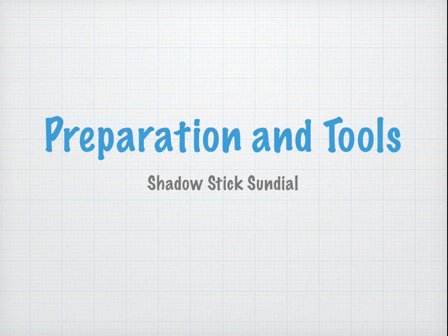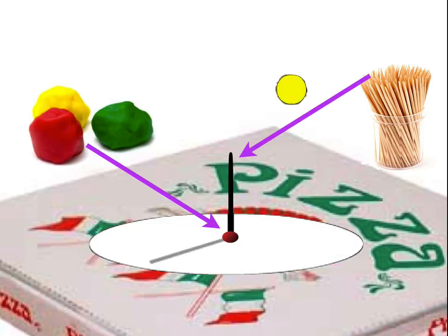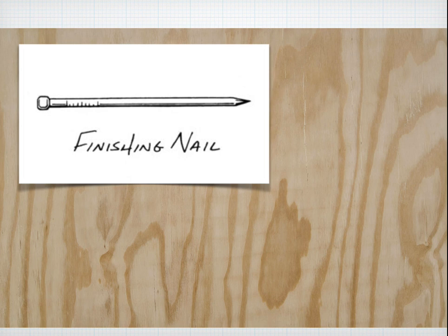Preparation and tools — making the shadow stick sundial. You could take a piece of cardboard such as the lid of a pizza box, some toothpicks, and maybe some clay to keep it stable. The vertical piece that you're going to stick in the pizza box is called the gnomon. This is what is going to be causing the shadows. Or you could simply stick a finishing nail on a piece of plywood so that it will cast a shadow.